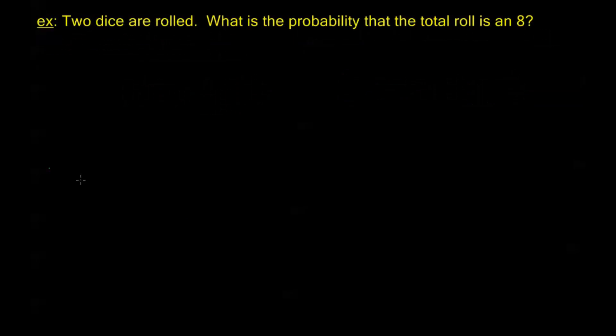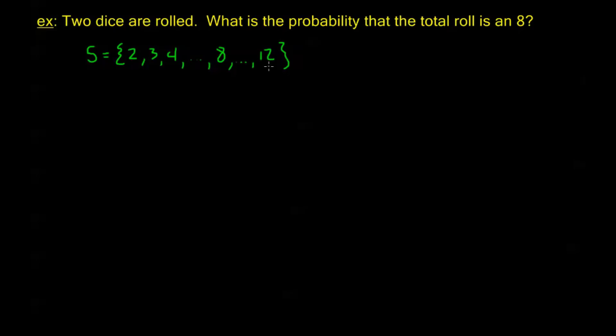Let's jump into some examples for non-uniform distribution problems. First: two dice are rolled — what is the probability that the total roll is eight? If we break up our sample space into all possible total rolls, S = {2, 3, 4, ..., 12}, we're in a non-uniform situation because each total has a different probability. It's twice as likely to roll a three as to roll a two because there are twice as many ways to do it. So we need to break this down into a uniform experiment.